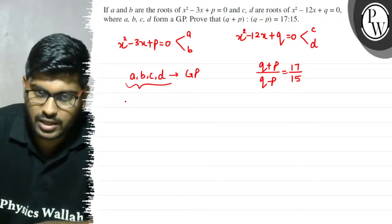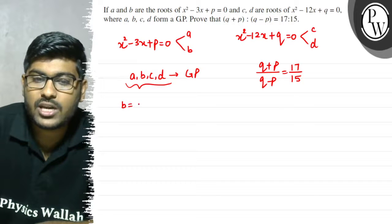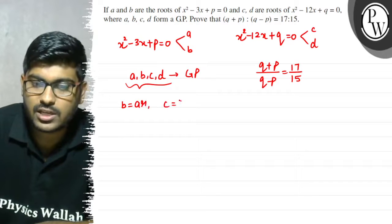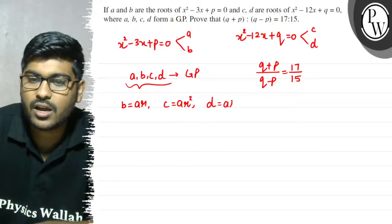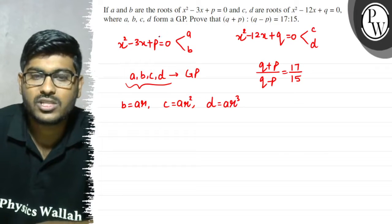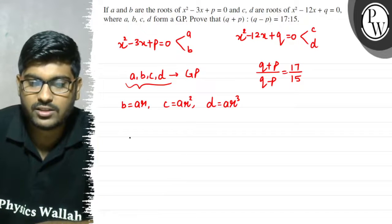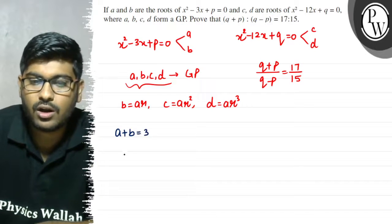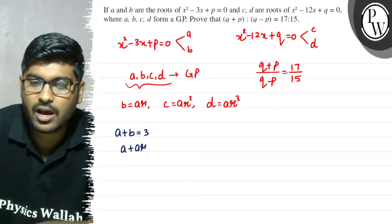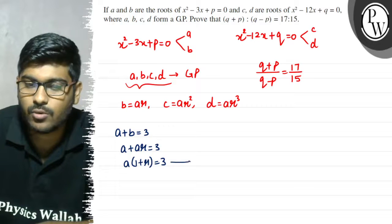We consider this GP has a common ratio of r. So b equals ar, c equals ar squared, d equals ar cubed. From the first equation, the sum of roots a plus b equals 3. That means a plus ar equals 3, which means a into 1 plus r equals 3. Let's call this equation number 1.